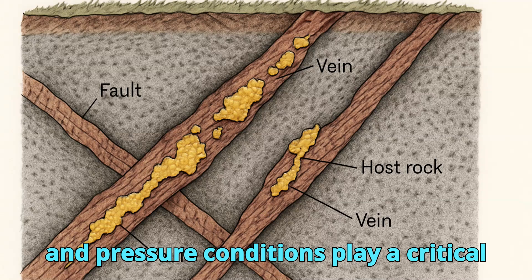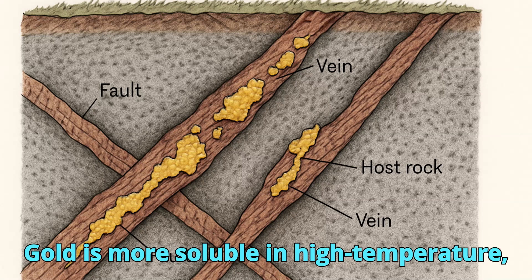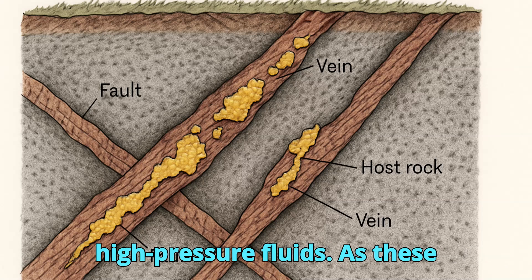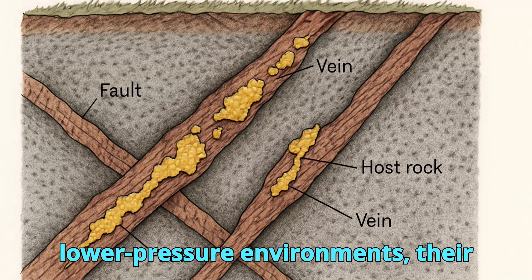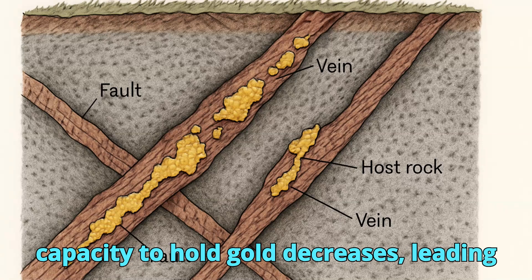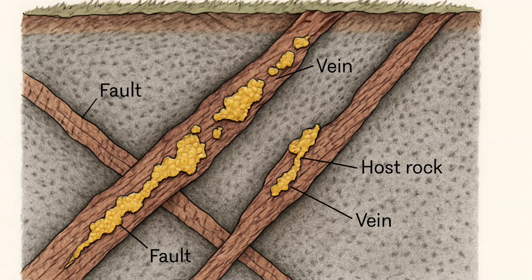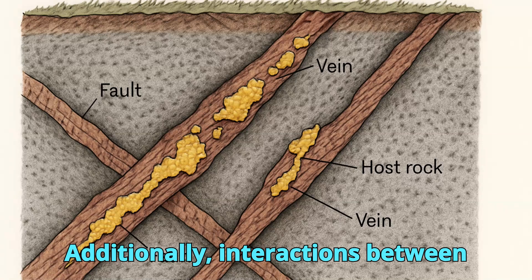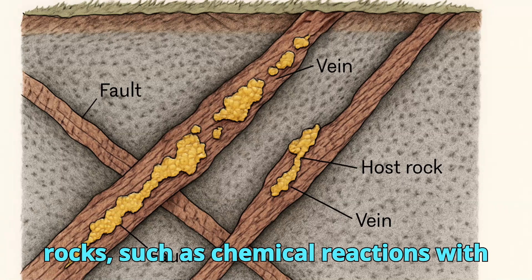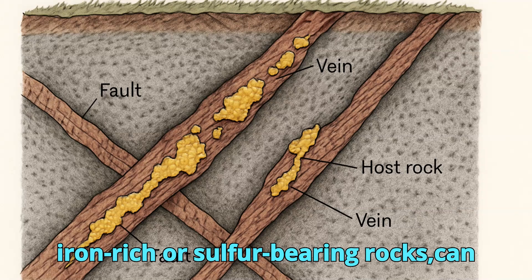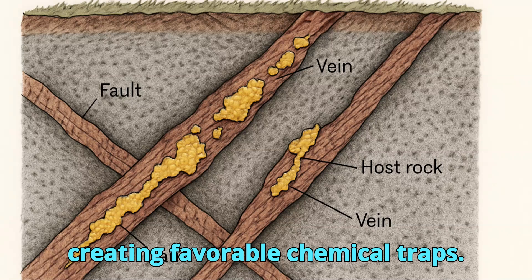Temperature and pressure conditions play a critical role in the deposition of gold. Gold is more soluble in high-temperature, high-pressure fluids. As these fluids ascend and encounter cooler, lower-pressure environments, their capacity to hold gold decreases, leading to the precipitation of gold minerals. Additionally, interactions between hydrothermal fluids and surrounding rocks — such as chemical reactions with iron-rich or sulfur-bearing rocks — can further facilitate gold deposition by creating favorable chemical traps.